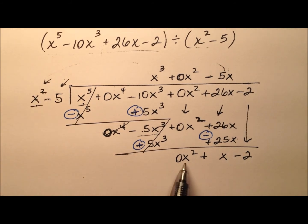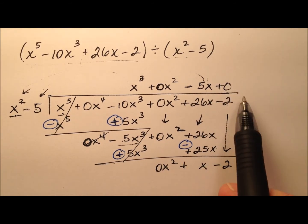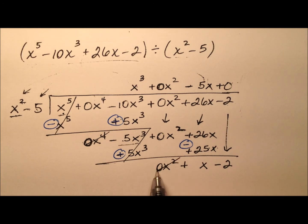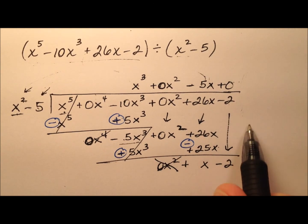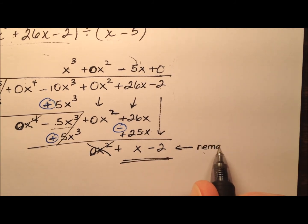So then once again what do I need to multiply by x squared to get 0x squared? Well zero, so plus zero. And it looks like we're out of terms here. So when I go back through I'm done with this, nothing else to bring down, so this then functions as my remainder.